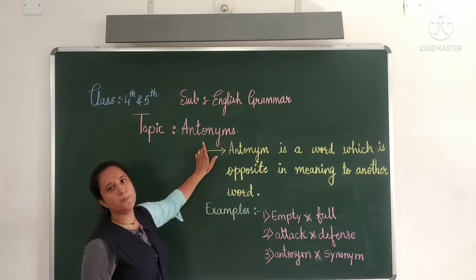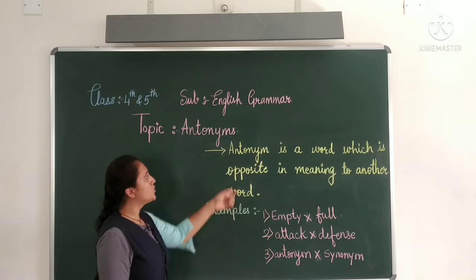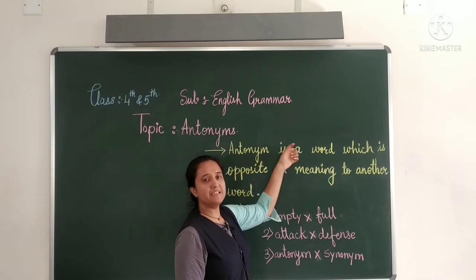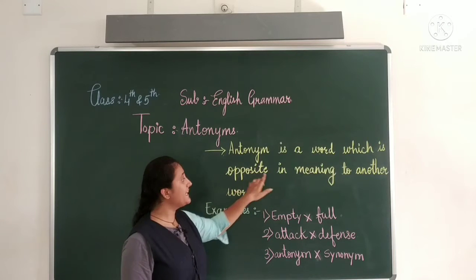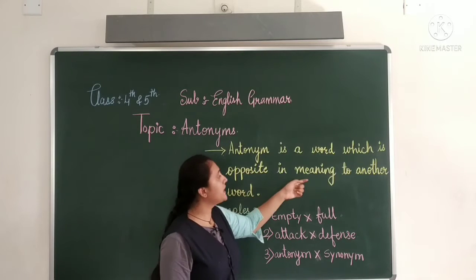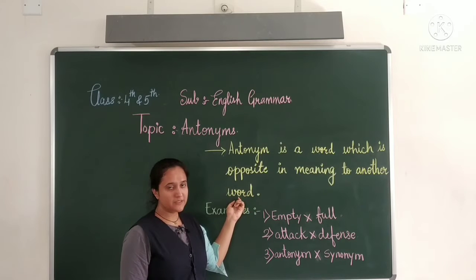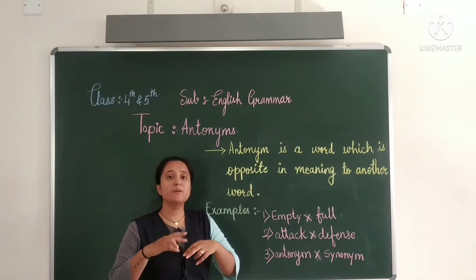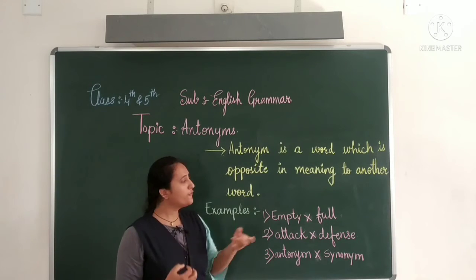What is our topic? Antonyms. Now, what is Antonyms? Antonyms is a word which is opposite in meaning — opposite kis mein hona chahiye? Uske meaning mein — to another word. Uske opposite meaning mein doosra word hona chahiye.